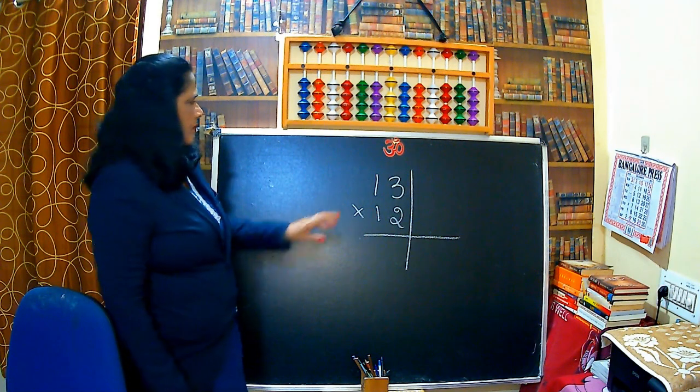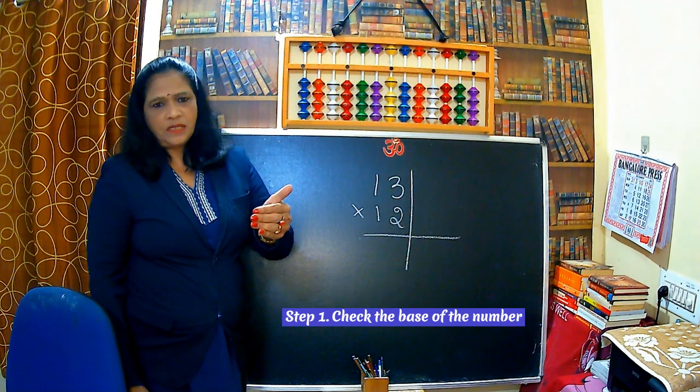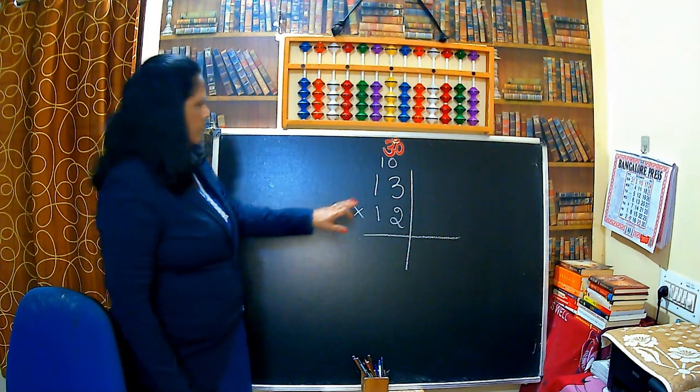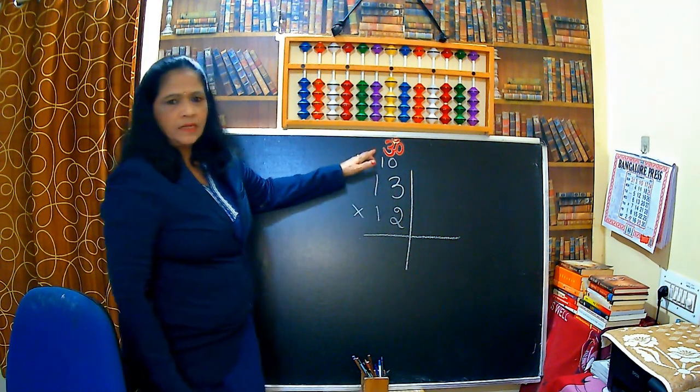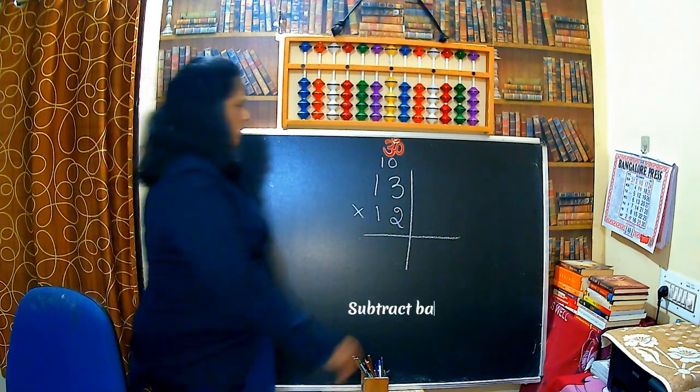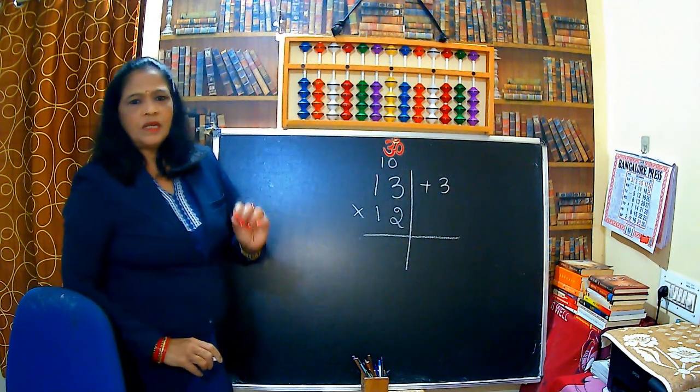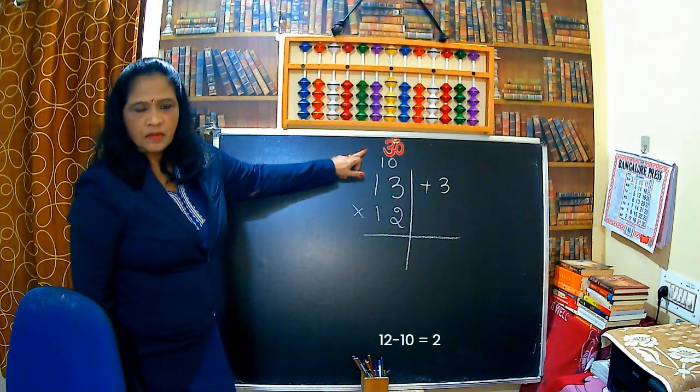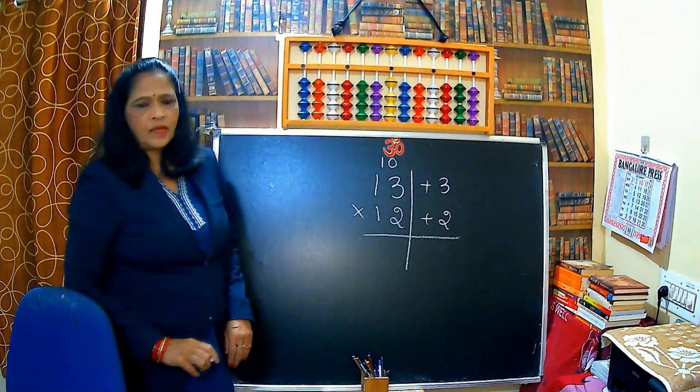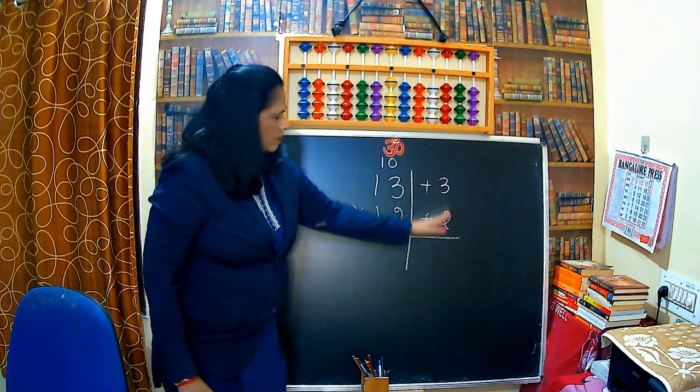So how can we do this? Let us see now. 13 × 12. First we have to see what is the base of the number. That means for which number base it's nearest. This is nearest to 10. So subtract 13 minus base. Subtract the given number by base. So 13 minus 10, that is 3. And also 12 minus base 10, that is 2.